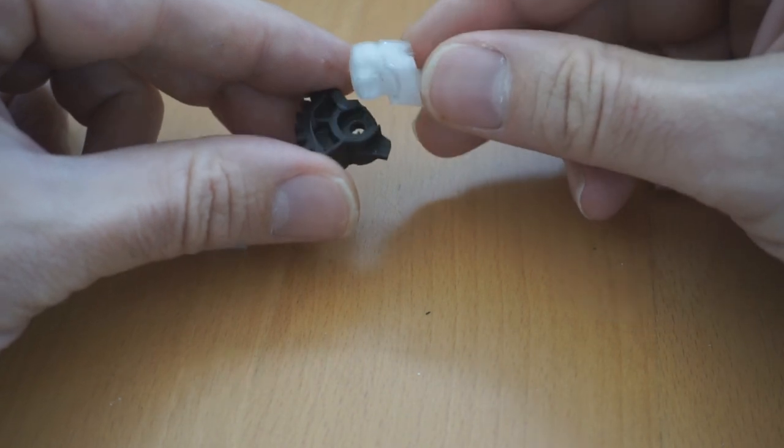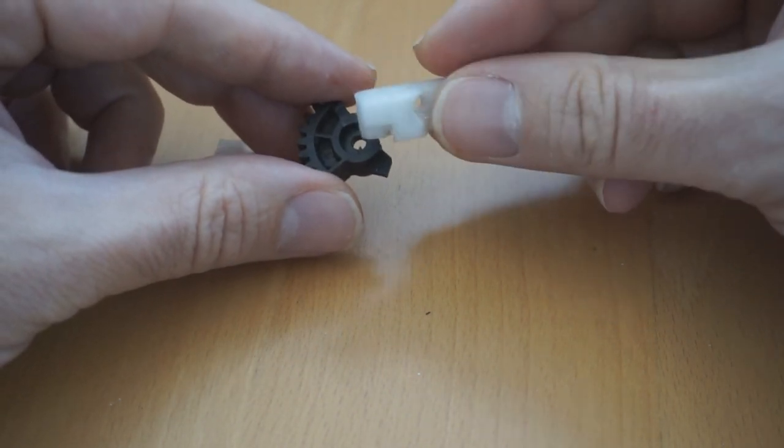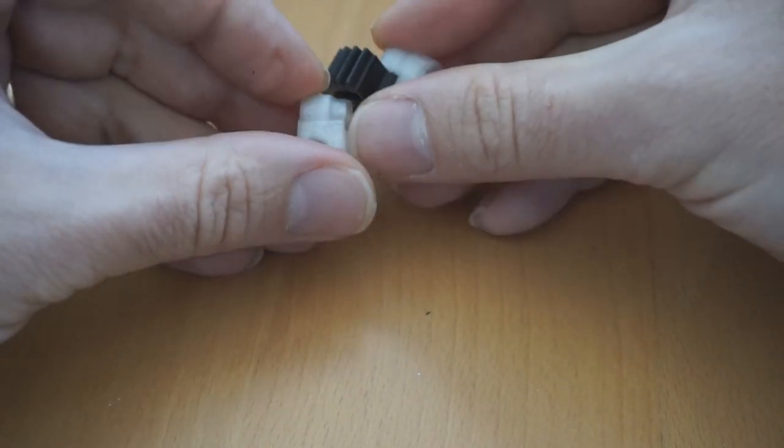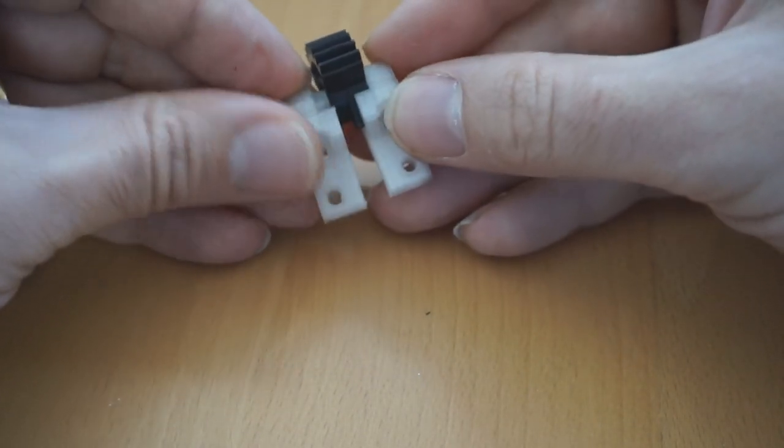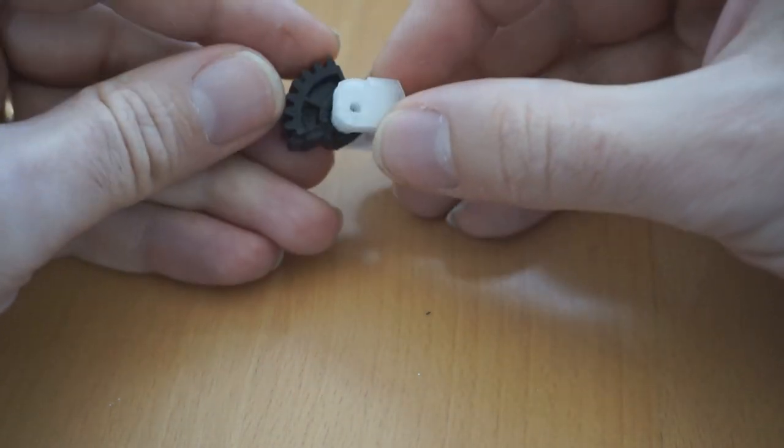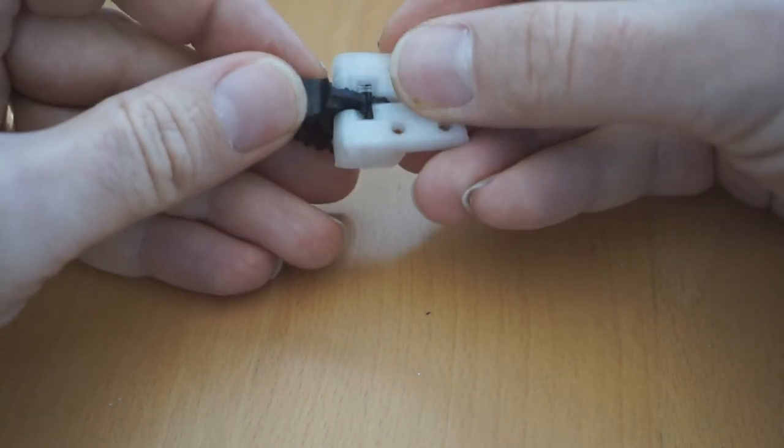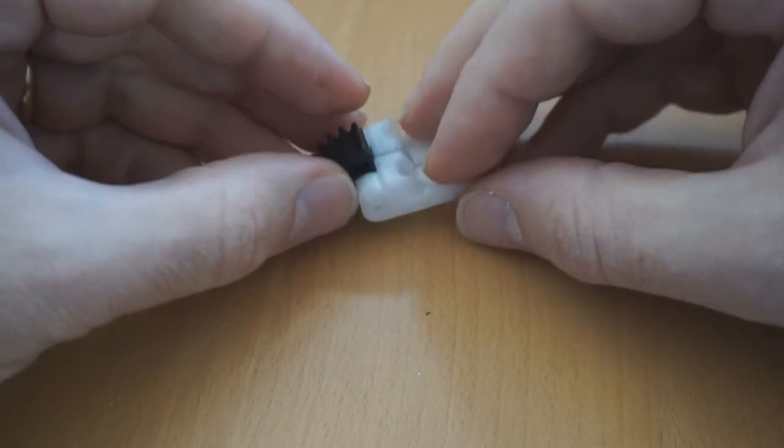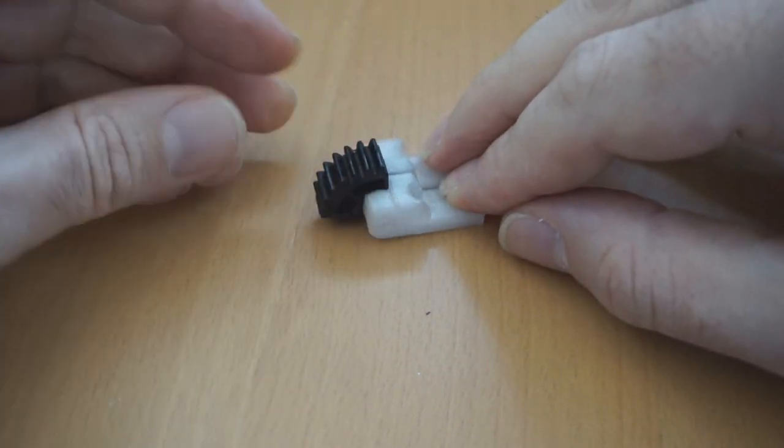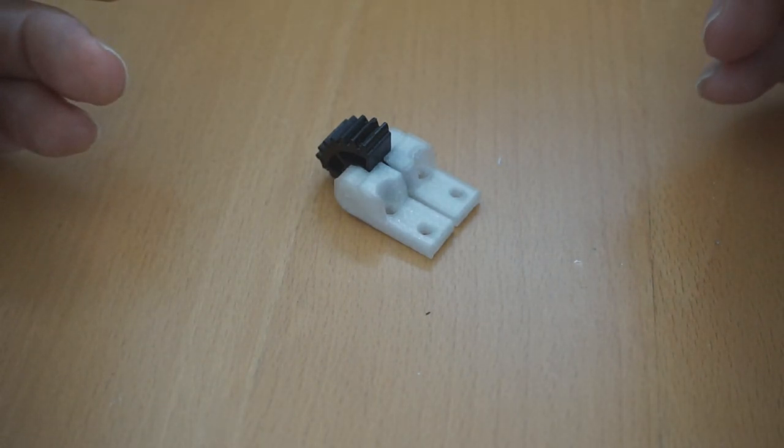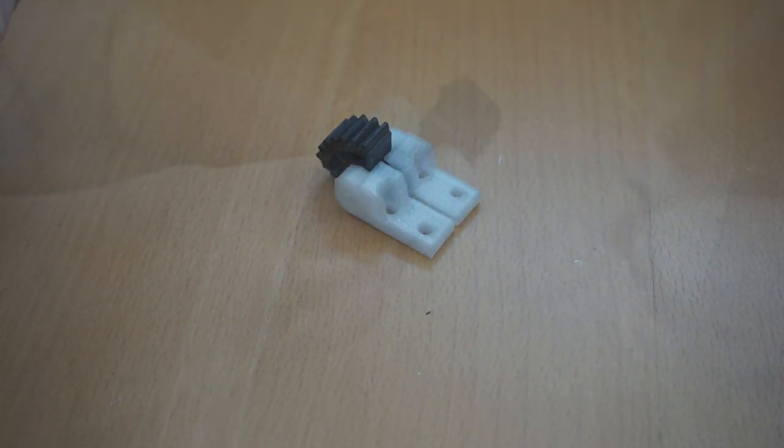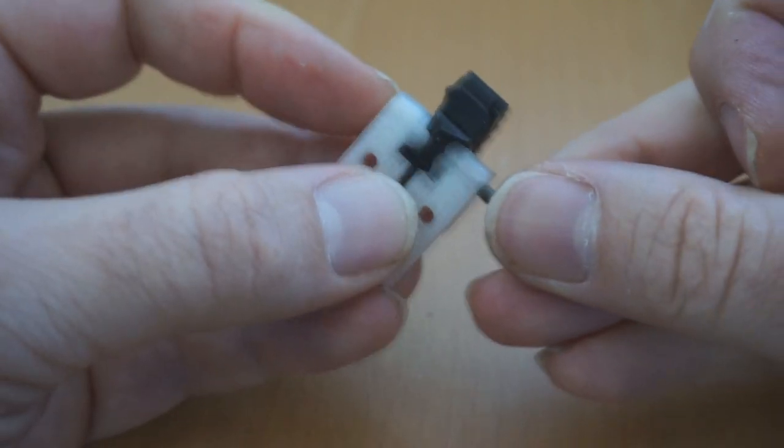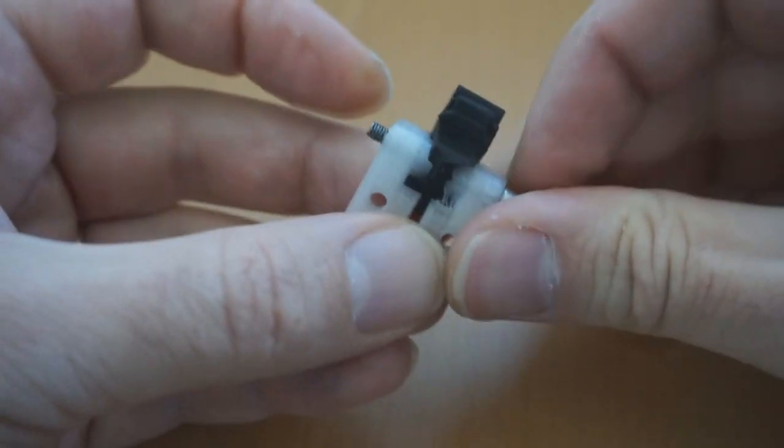So those white parts are printed in PETG, that is a quite strong plastic. And you see they hold the black gear in place and with a screw I connected the parts to the gear to make a solid single piece.